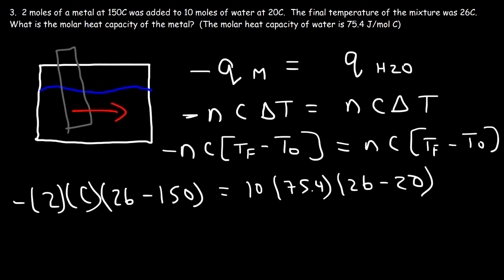26 minus 150, that's negative 124, and so that's why we need this negative sign so that the left side will be positive. So negative 124 times negative 2, that's positive 248. On the right side, 26 minus 20 is 6, and 6 times 75.4 times 10 is 4524. So now we just got to take 4524 and divide it by 248. So the molar heat capacity of the metal is 18.24 joules per mole per degree Celsius.